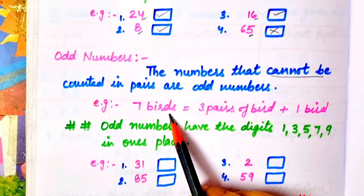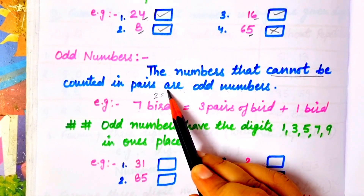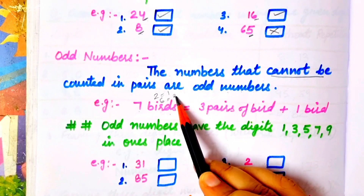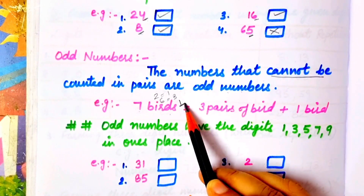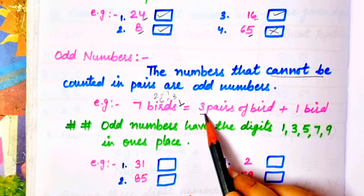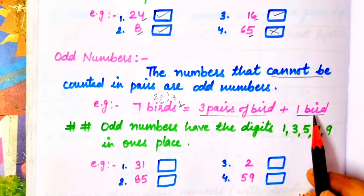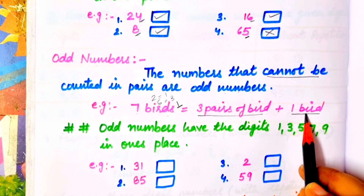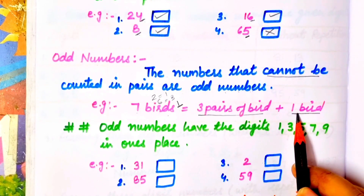For example, 7 birds — we have 7 birds. It will make 1 pair, then 2 pairs, and 3 pairs using 6 birds. After 6, there will be 1 bird left over — it means 3 pairs are formed, but 1 bird is still remaining and cannot be paired.